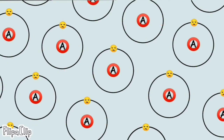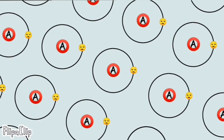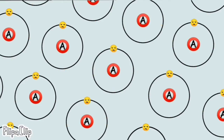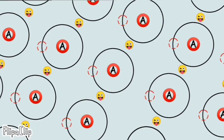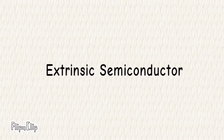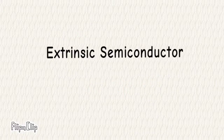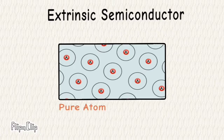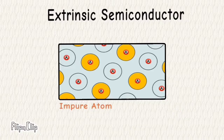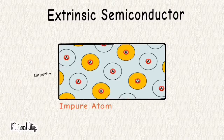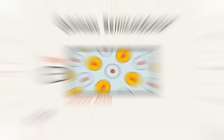This type of semiconductor has a certain natural electricity flow. Now we'll talk about extrinsic semiconductor. Basically, this is a semiconductor where some different type of atom can be added inside a pure atom. This different type of atom is called an impurity, and this impurity can be added.